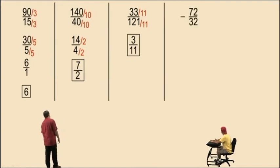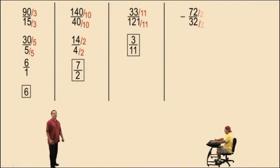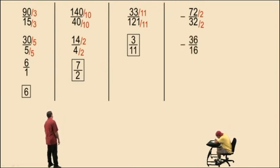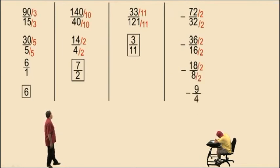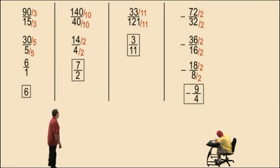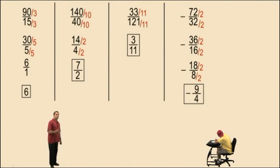Let's go to another one: negative 72 over 32. These are numbers from your times tables. They're both even, so let's divide by 2. 72 divided by 2 is 36, 32 divided by 2 is 16 — don't forget the negative sign. Again we have even numbers, so divide by 2: that gives us 18 over 8. Again divide by 2 and we get 9 over 4. Our final answer is negative 9 fourths. Notice we divided by 2 three times — 2 times 2 times 2 is 8 — so you could have done this in one step by dividing by 8.